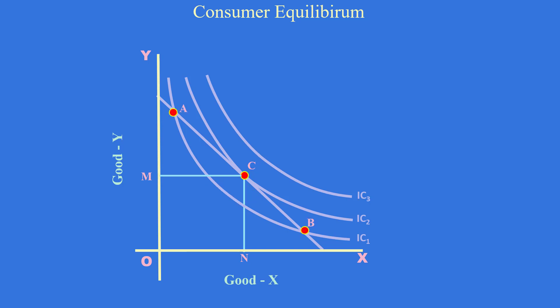Though consumer can buy combinations A and B, he will not buy. They are on a lower indifference curve. He will get less utility.